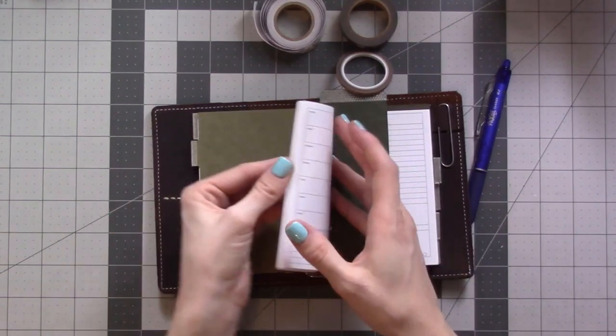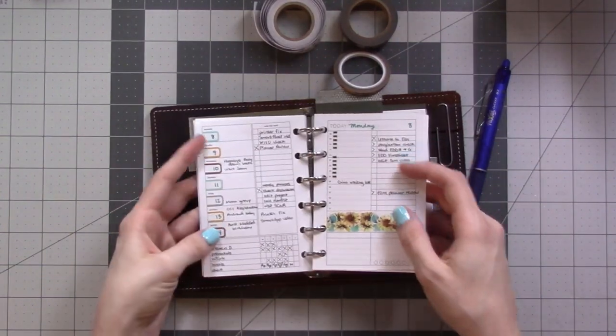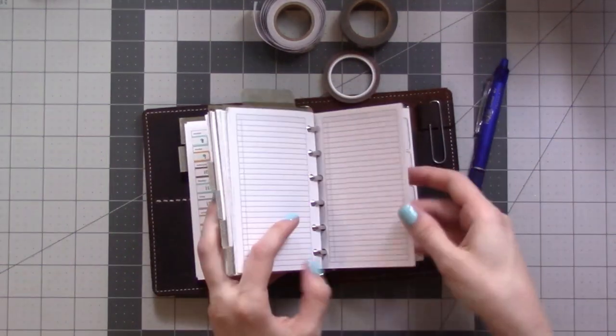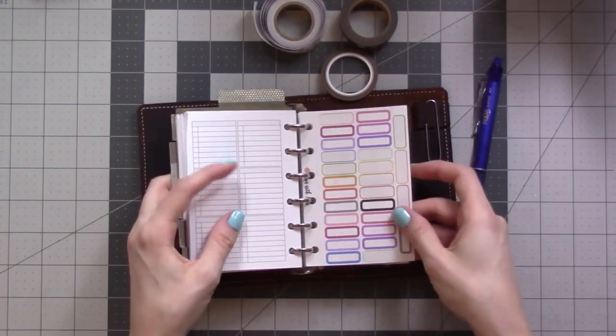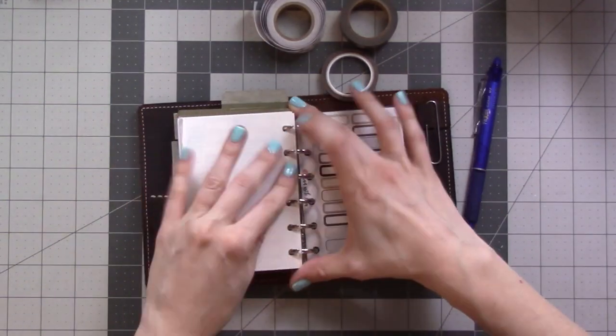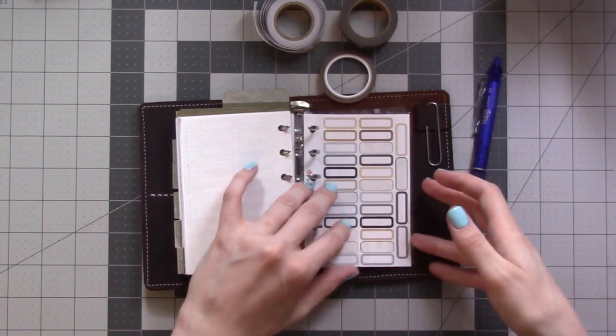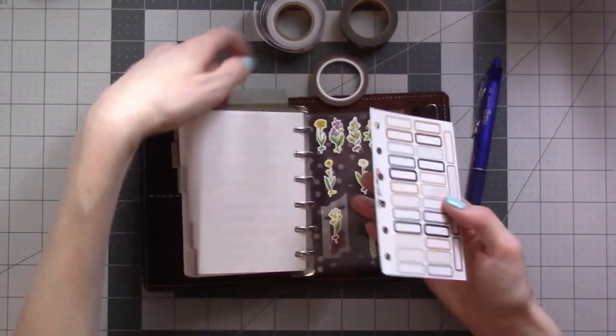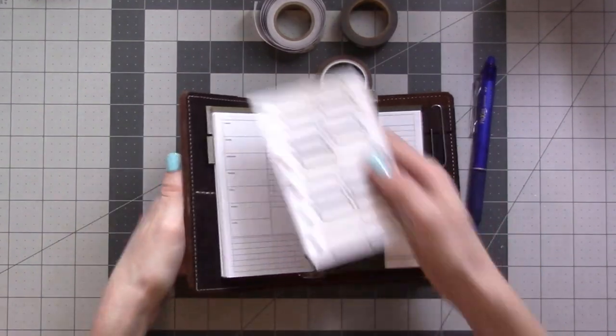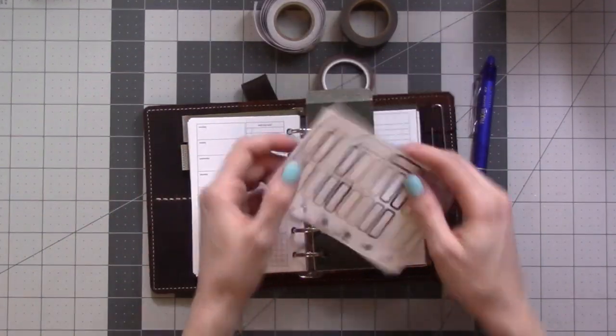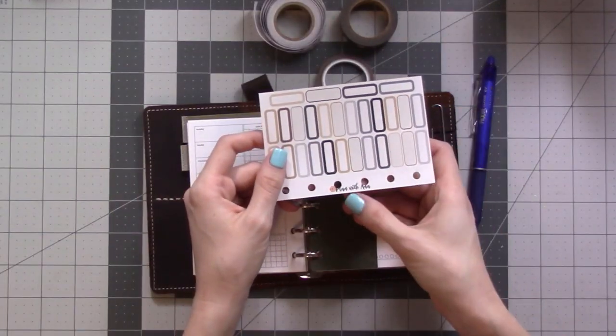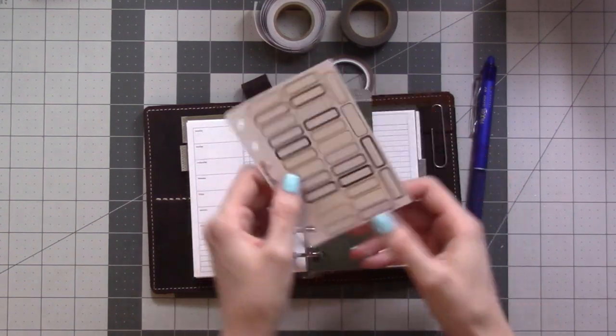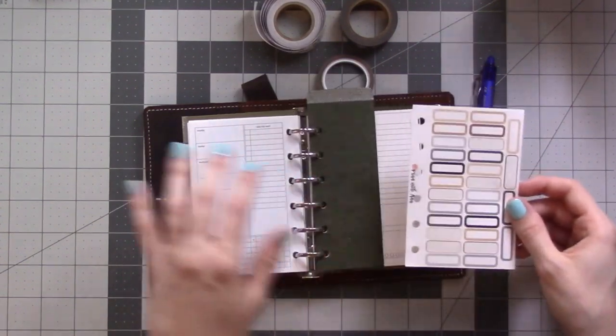These stickers that I did my little dates on the week with are these guys here. I linked these in my haul video when I got all the stuff from my ring planner. They're from Plan with Anna. That way I don't even have to worry about it.